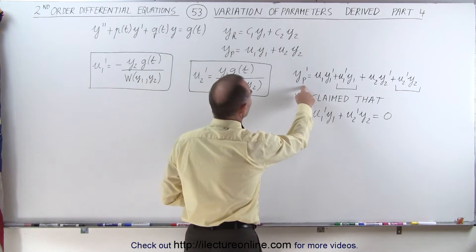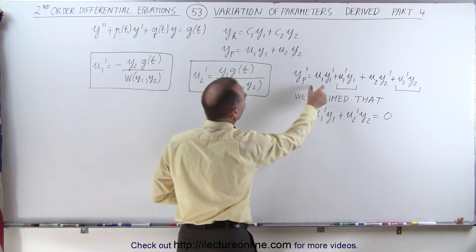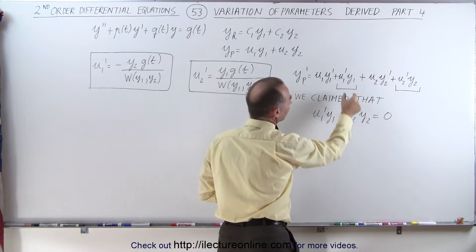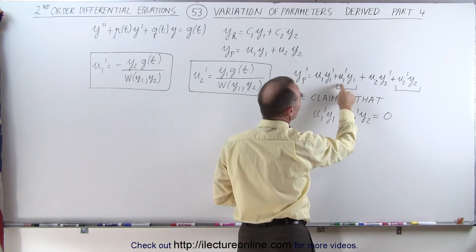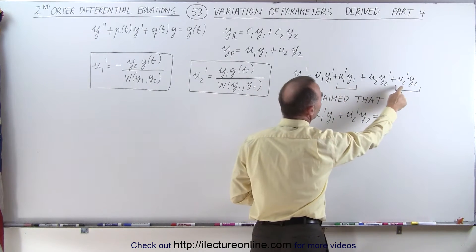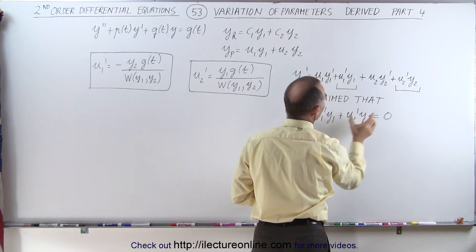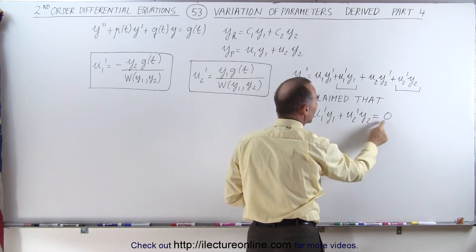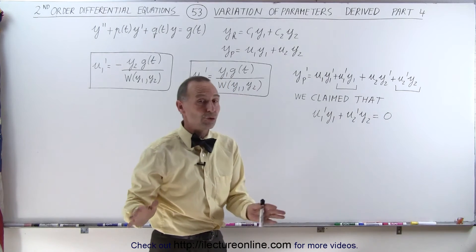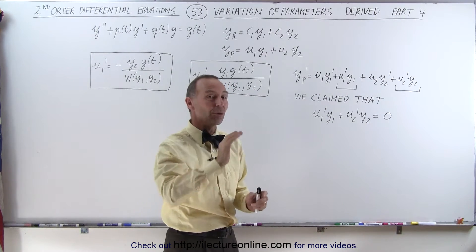When we took the first derivative of the particular solution, we ended up with four terms. But I took these two terms right here, the u1 prime y1 and the u2 prime y2, and said that the sum of those two equals zero. I did not show you why that was true. I said I was going to show you later.